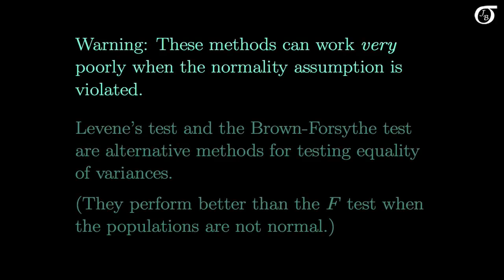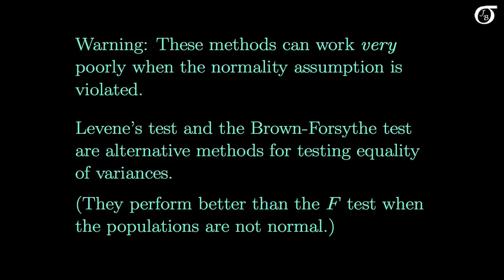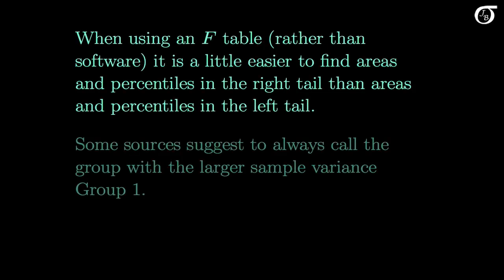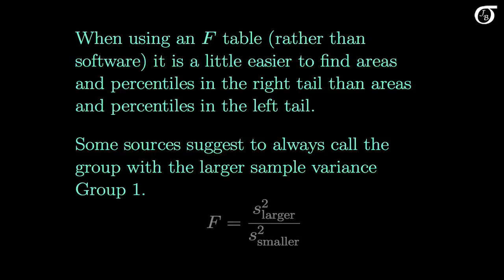Let's look at a few important points. Once again, these methods can work very poorly when the normality assumption is violated. Levene's test and the closely related Brown-Forsythe test are alternative methods for testing equality of variances that perform better than the F-test when the populations are not normal. When using an F-table rather than software, it is a little easier to find areas and percentiles in the right tail of the distribution, simply because of the way F-tables are usually set up. Because of that, some sources suggest to always call the group with the larger sample variance group 1 — always put the larger sample variance on top. This ensures the ratio of sample variances is greater than 1 and falls in the right tail. That makes finding the p-value easier when using a table, but if we're using software, it doesn't matter which group we call group 1.